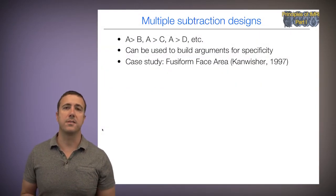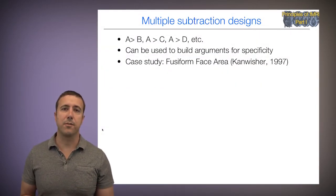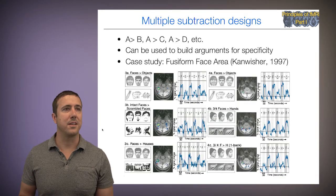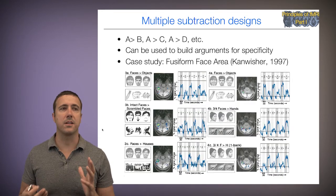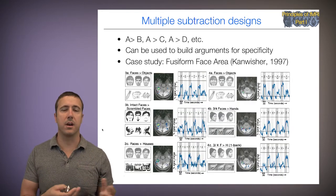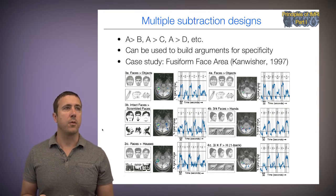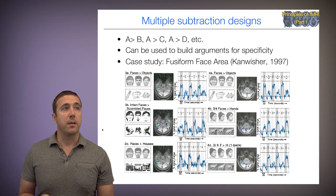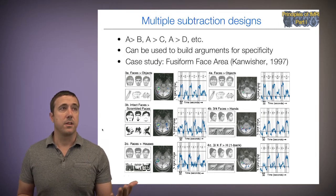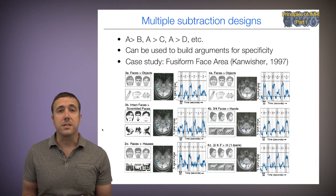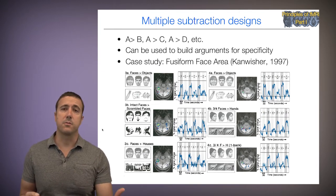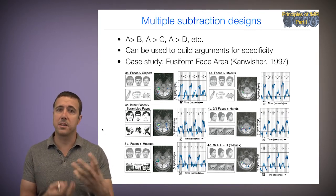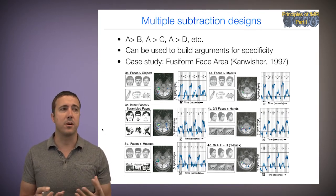A case study here is studies of the fusiform face area by Nancy Kanwisher et al. They did some really nice studies, and here's a slide from one of them, in which faces are compared with many different kinds of things. They compare faces with objects, but of course those differ in their spatial frequencies. So they compare intact faces with scrambled faces, where the basic spatial frequencies are preserved.